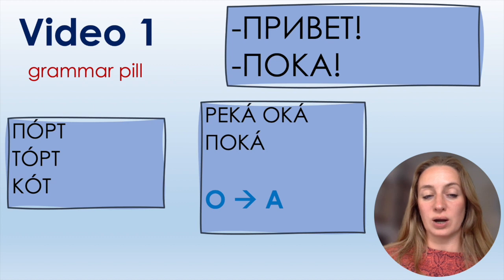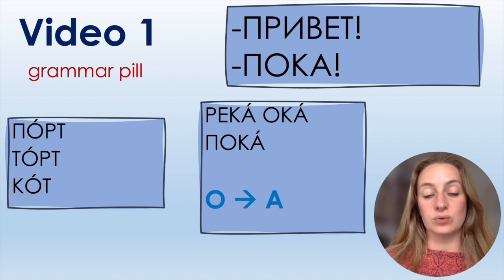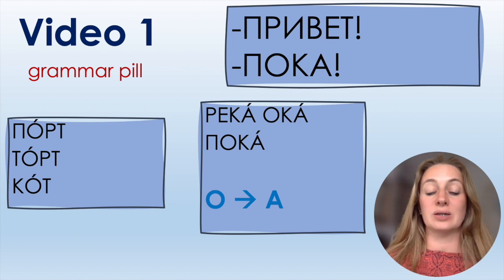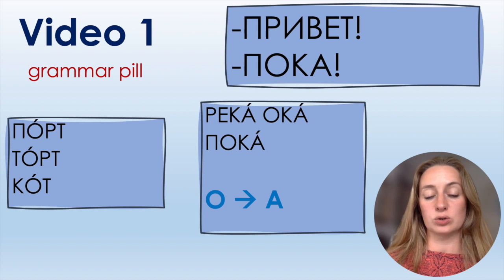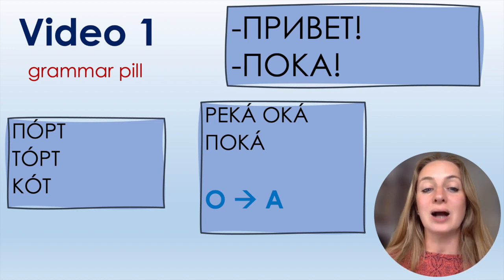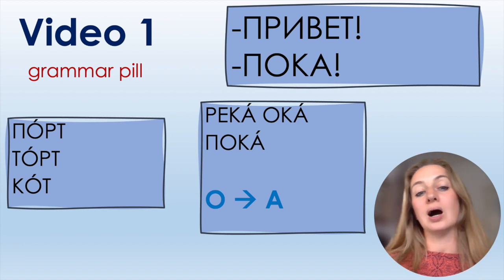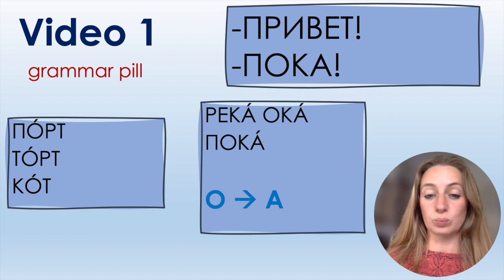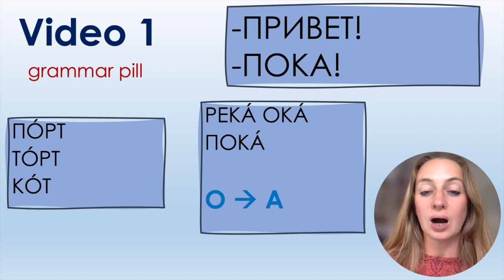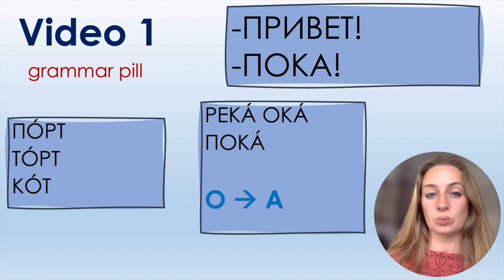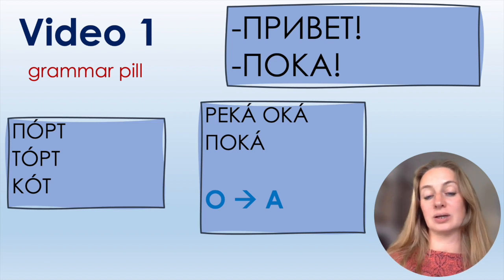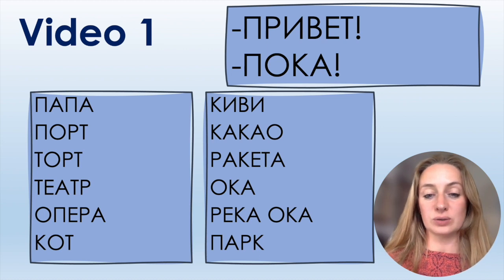Now a little grammar: often if you see О written, you pronounce it like А. Three words where О sounds like О are: порт, торт, кот — because there's only one vowel and it's stressed. But when О is unstressed — like in река, Ока, or пока — we pronounce А instead. So we say река, А-ка, and пака.